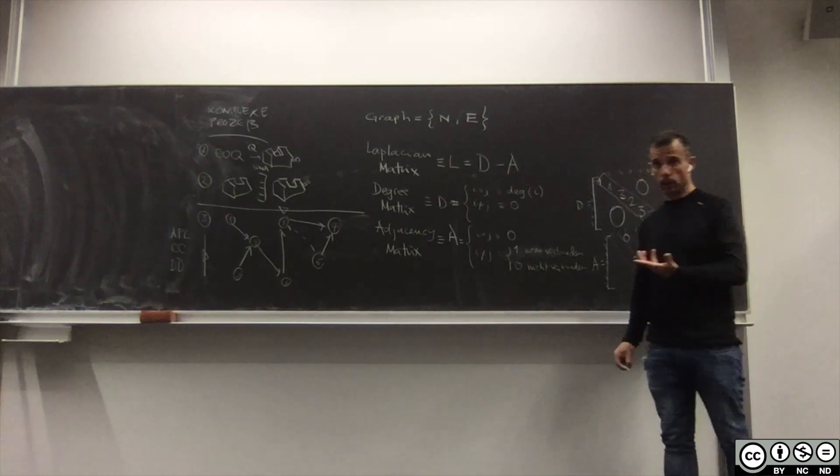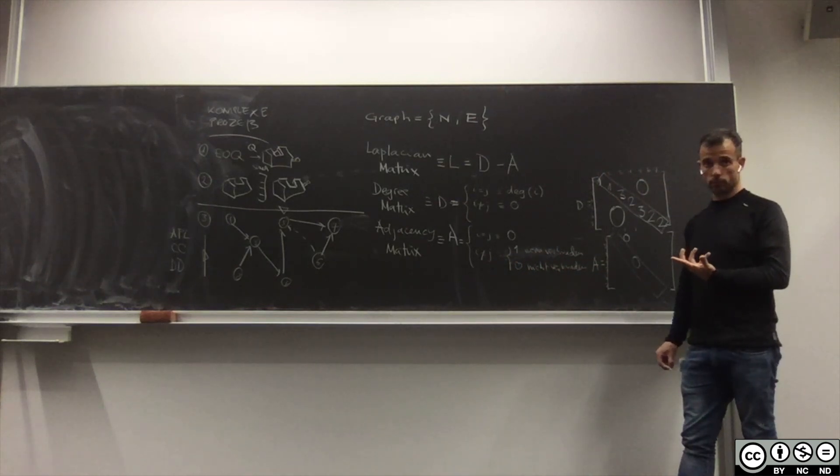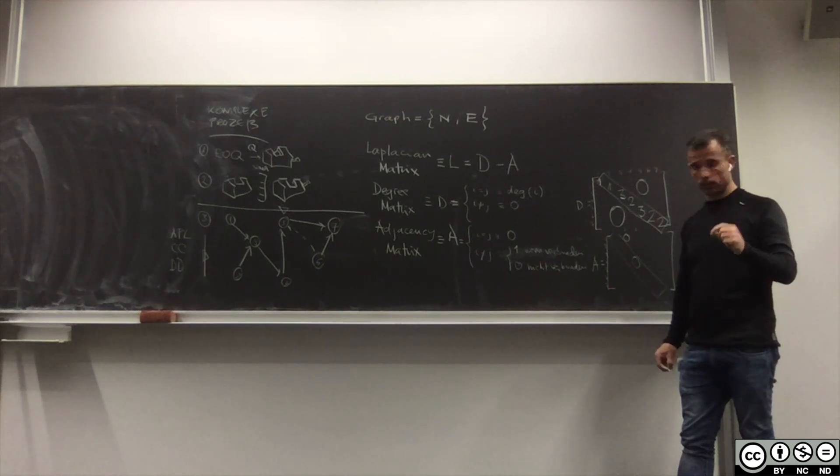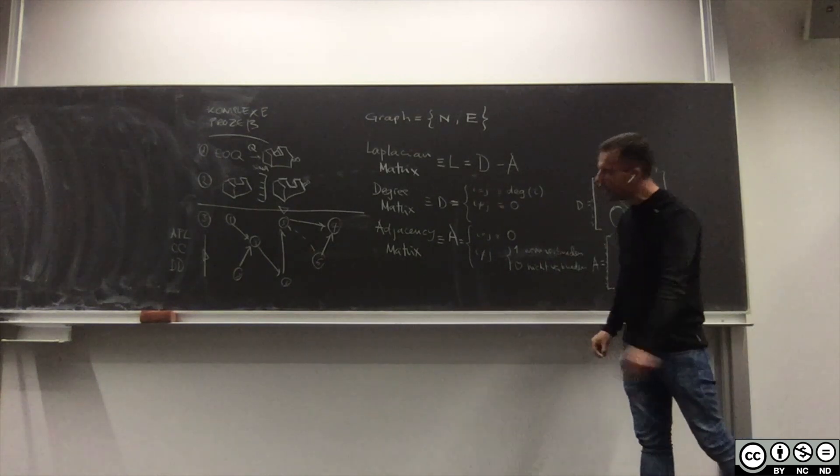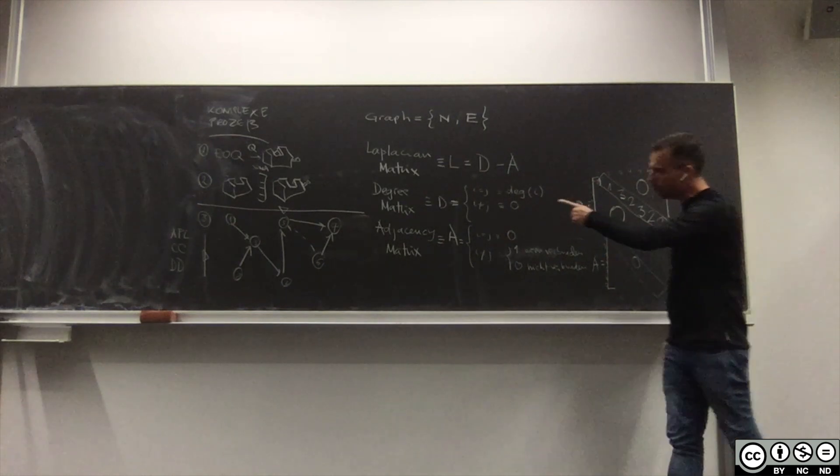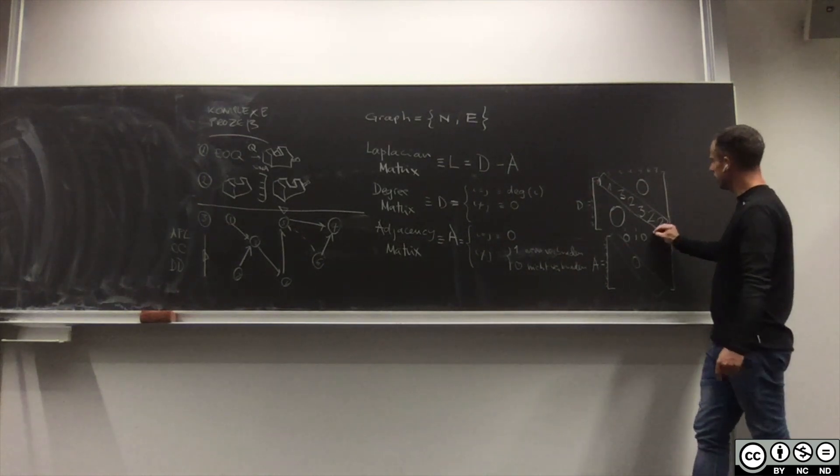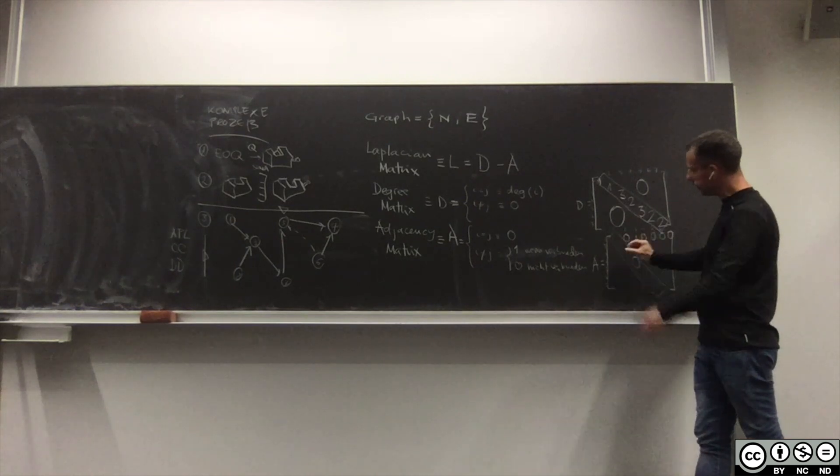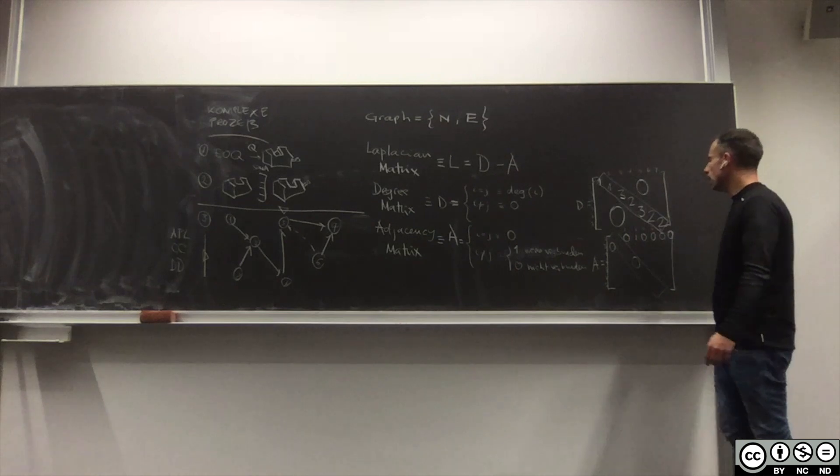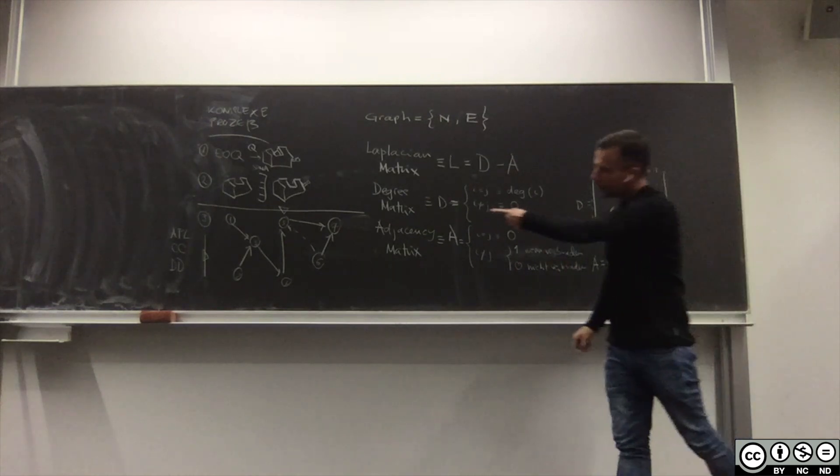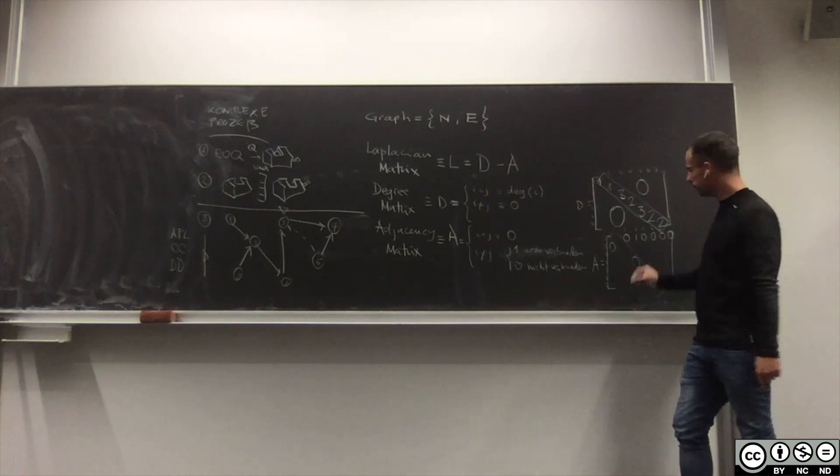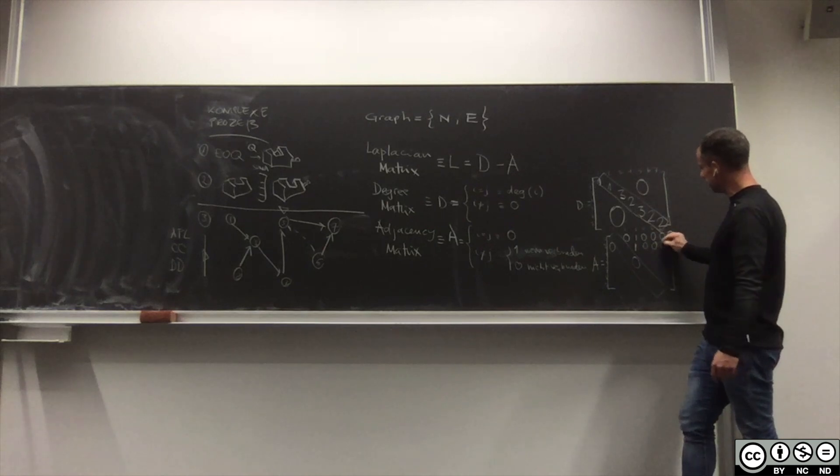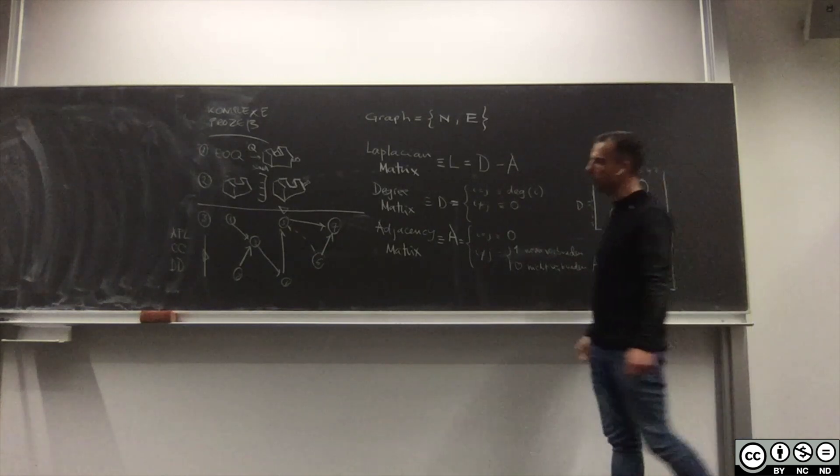Ist 1 verbunden mit 4? Nein ein 0. Ist 1 verbunden mit 5? Nein wieder ein 0. 1 verbunden mit 6? 0. Der Knoten 2, also diese Matrix ist immer symmetrisch deshalb hier auch ein 0. Knoten 2 ist verbunden mit 3? Ja, hier ein 1 und dann mit keinem anderen.